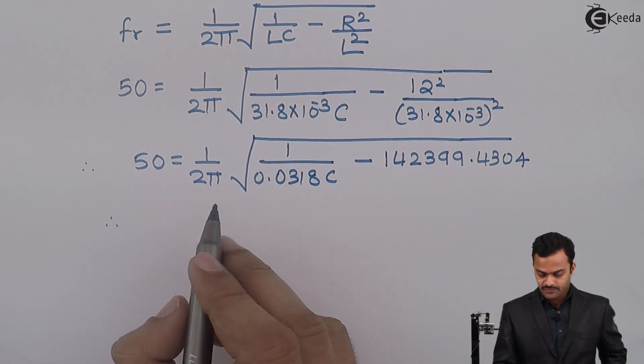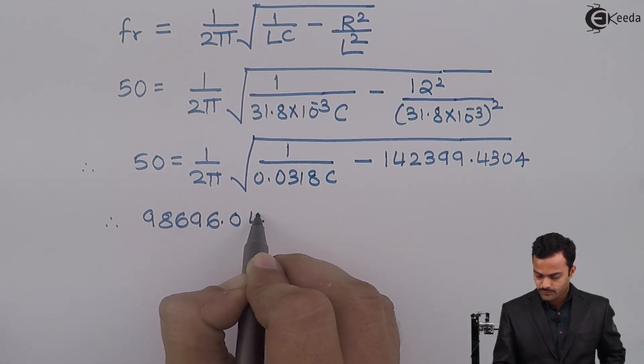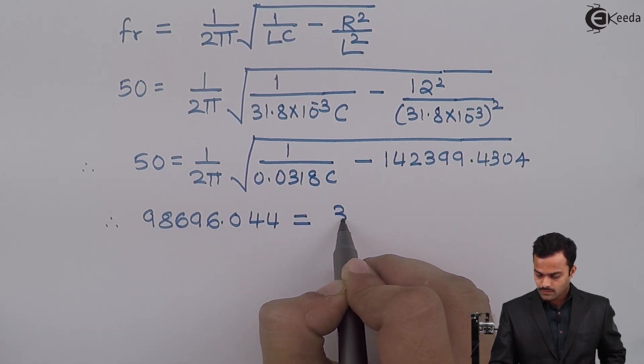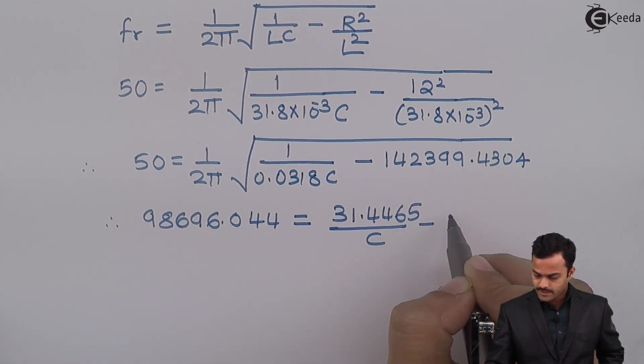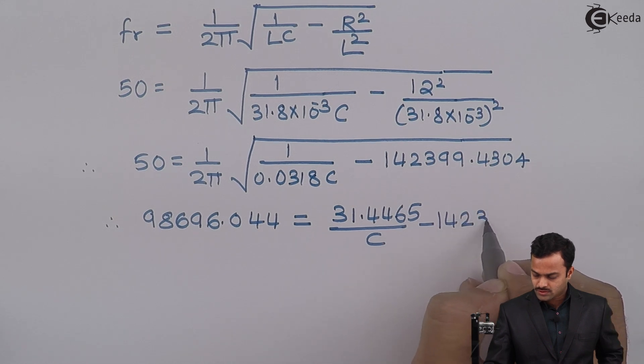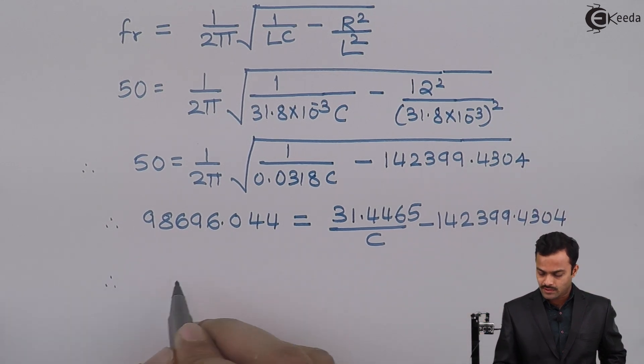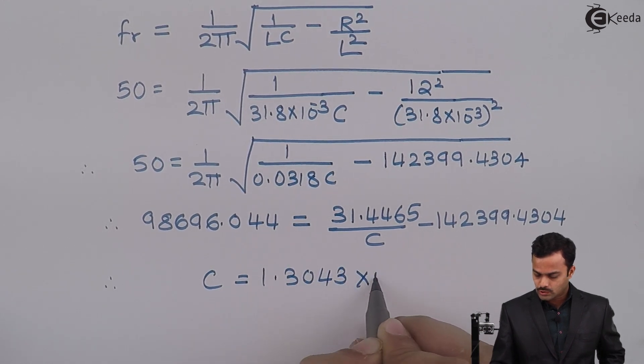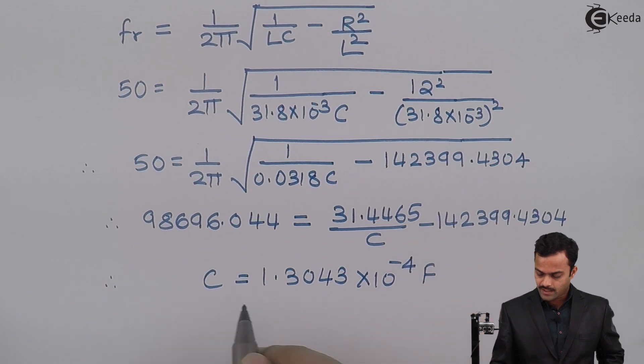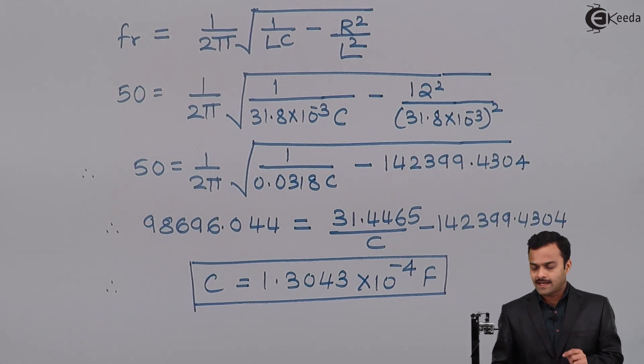If I further simplify it will be 98696.044 equal to 31.4465 upon C minus 142399.4304. In this equation only unknown is C and that is equal to 1.3043 into 10 raised to minus 4 farad. The hint is identify its resonance and apply the formula and get an answer. Thank you.